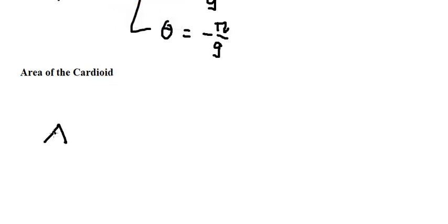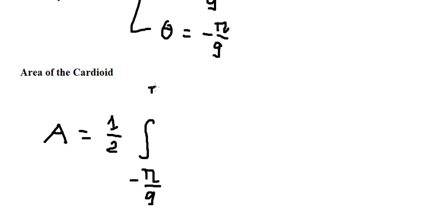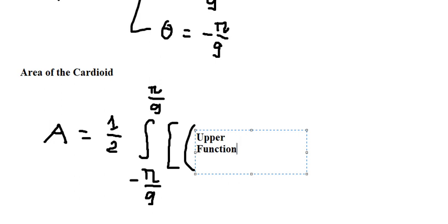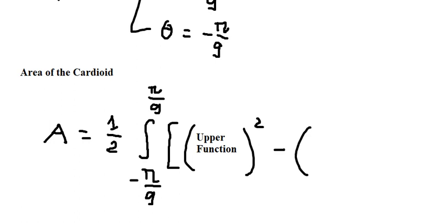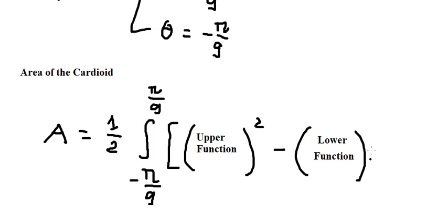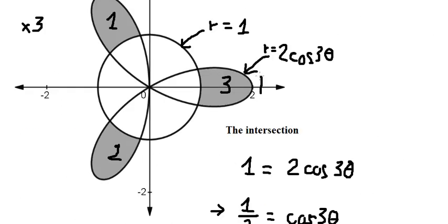Now we apply the area formula. The area equals one-half times the integral from −π/9 to +π/9. We use the upper function squared minus the lower function squared — the curve is the upper and the circle is the lower.